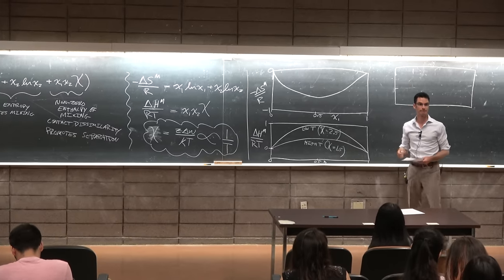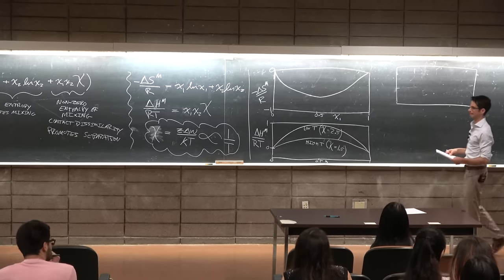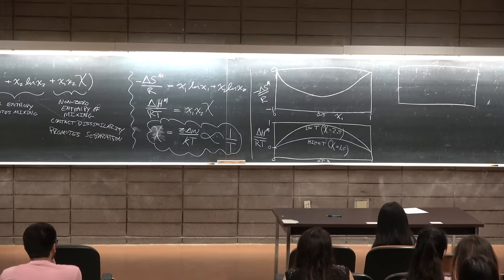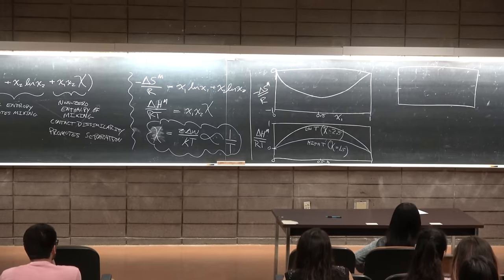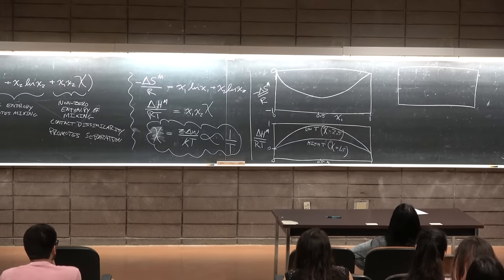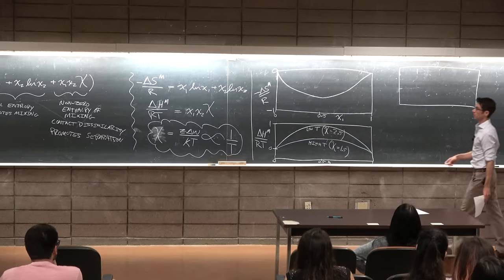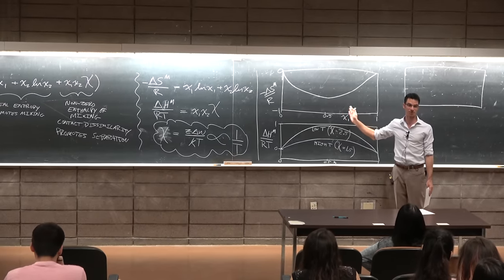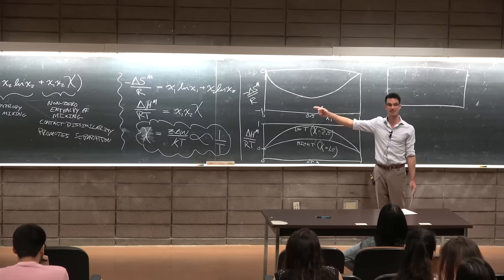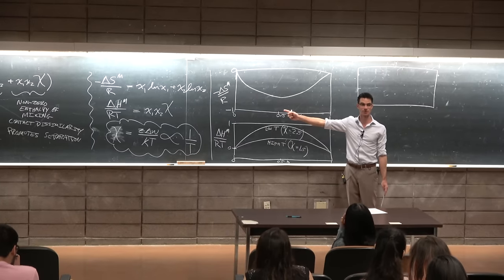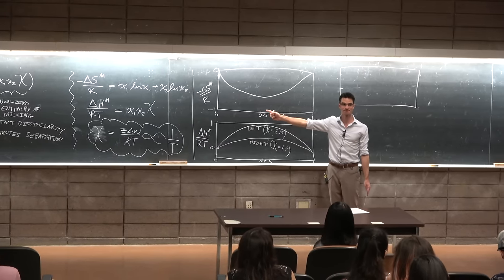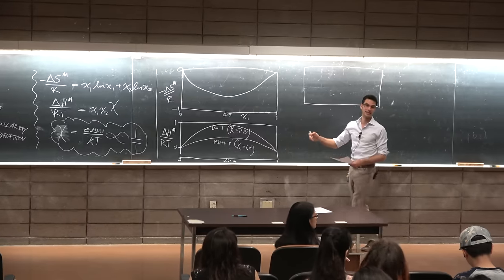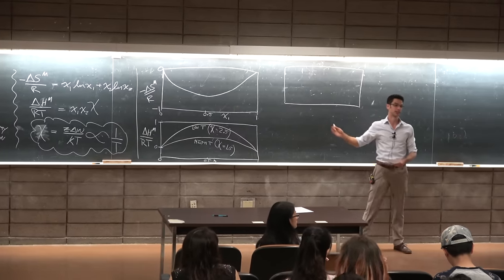Student question: is there a reason it goes from 0 to 1 for enthalpy and 0 to −1 for entropy? This is literally what you get if you plug these mole fractions into the equation — you're always going to end up with a fraction.